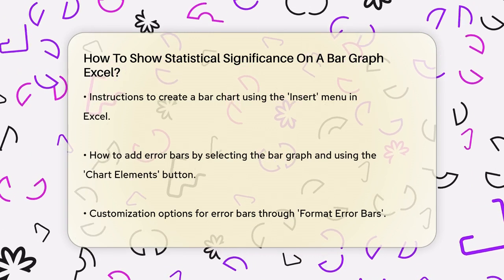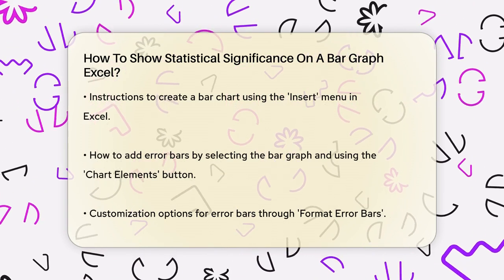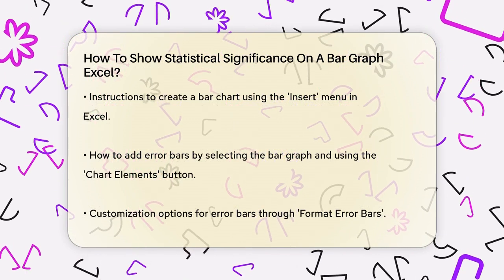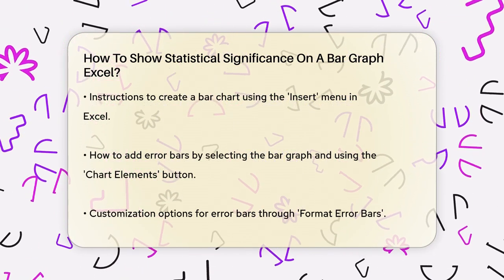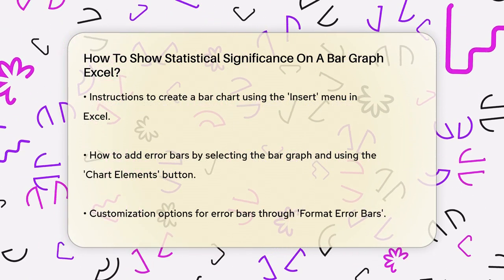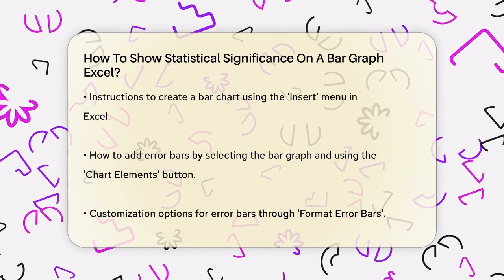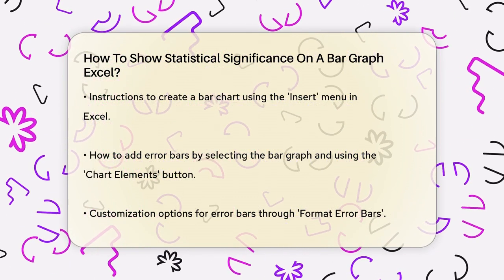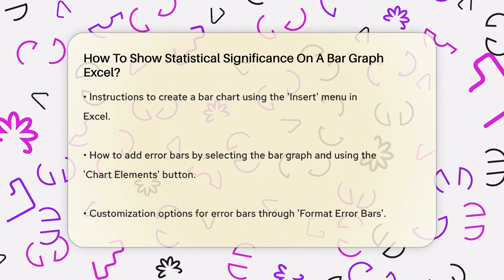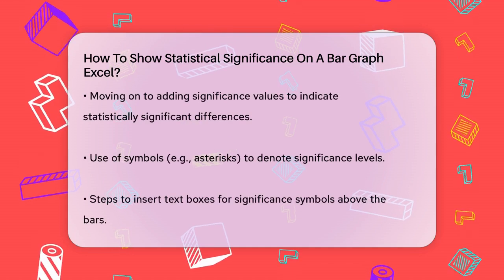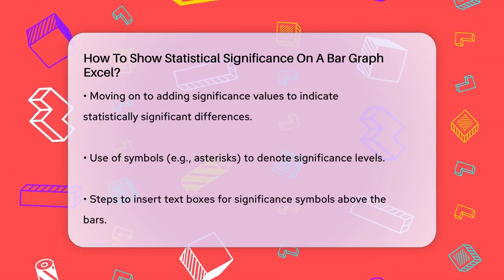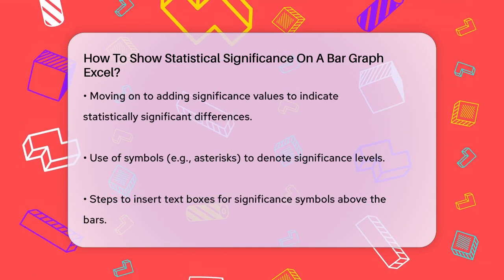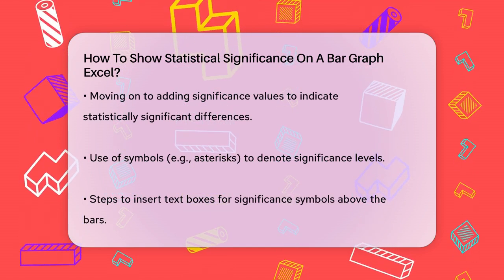Now let's move on to adding the significance values. This is where you indicate which differences between groups are statistically significant. You can use symbols like asterisks, double asterisks, or letters to denote significance. Select the bar graph and go to the Design tab. Use the Text Box option from the Insert menu to add text above the bars.